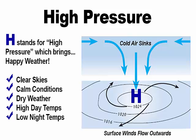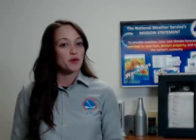Surface winds in the northern hemisphere blow clockwise around a high pressure system. A good way to remember what kind of weather a high pressure system creates is that high pressure creates happy weather — that is sunny, warm, and calm.